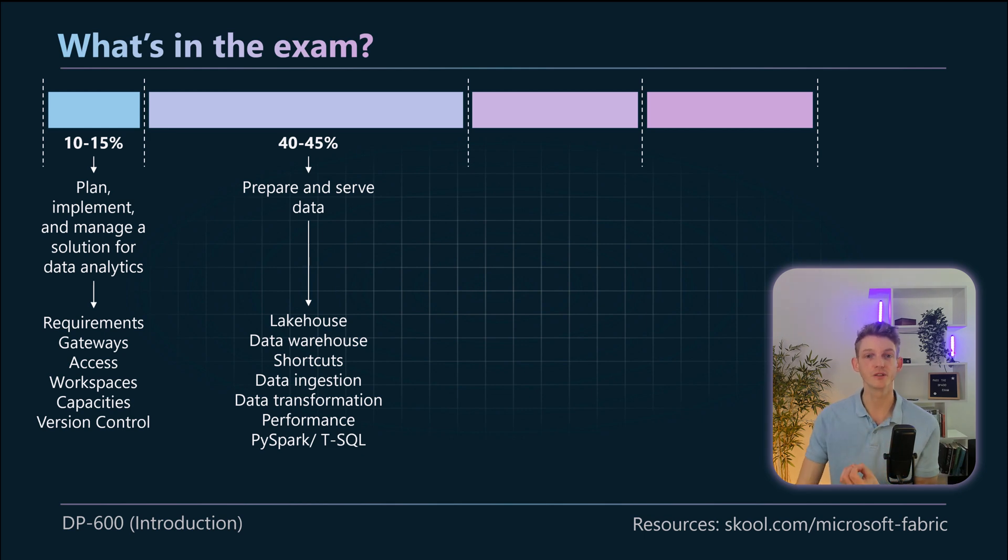Next we've got performance, so how do we optimize performance both in terms of getting data into Fabric but also in terms of the transformation piece. So if you've got Spark jobs that are running really long or you've got some T-SQL scripts that are really not performing very well, they're taking a long time to return your data, what can you do to monitor performance then optimize it. And as I mentioned you will need to know PySpark and T-SQL to a kind of intermediate level there, so that's something to bear in mind for this exam.